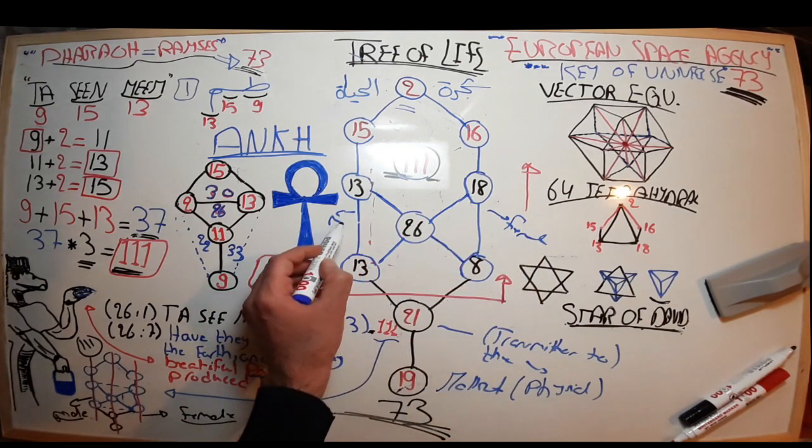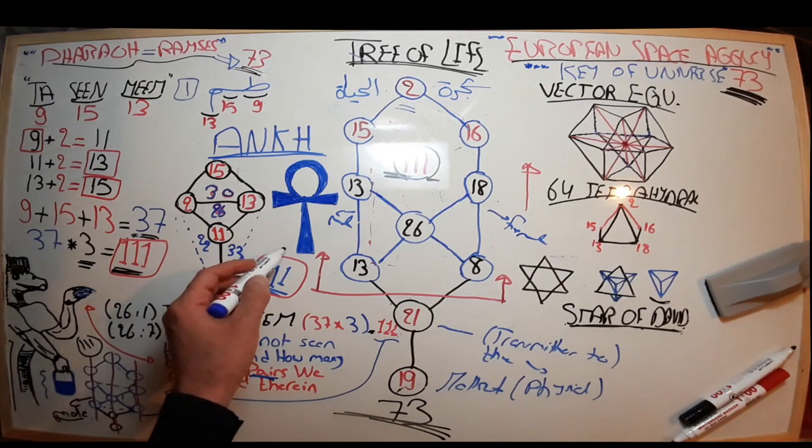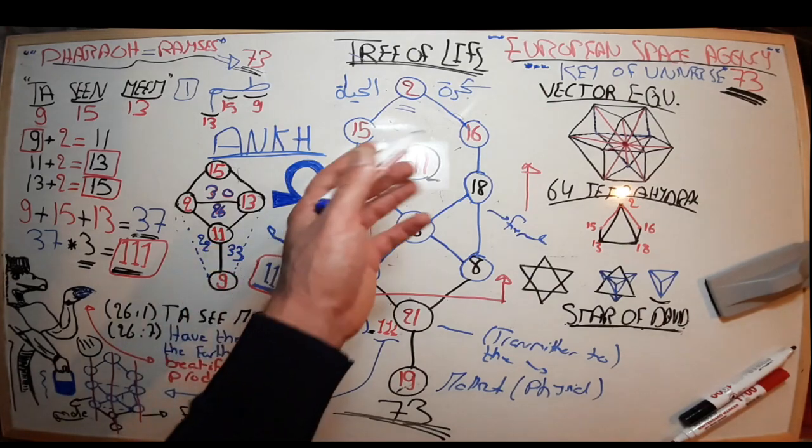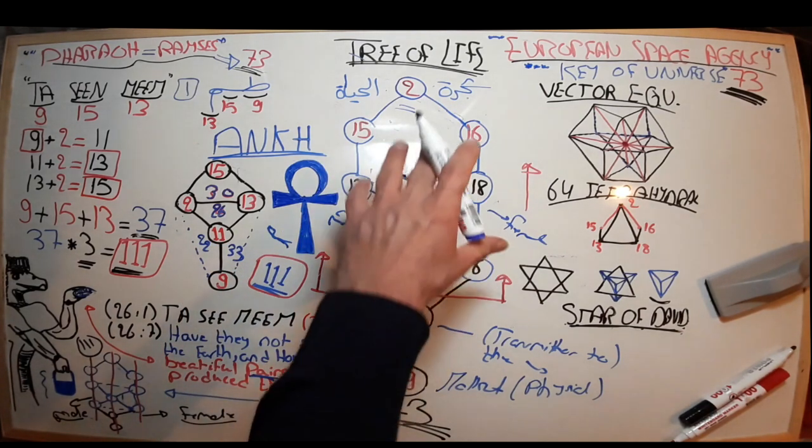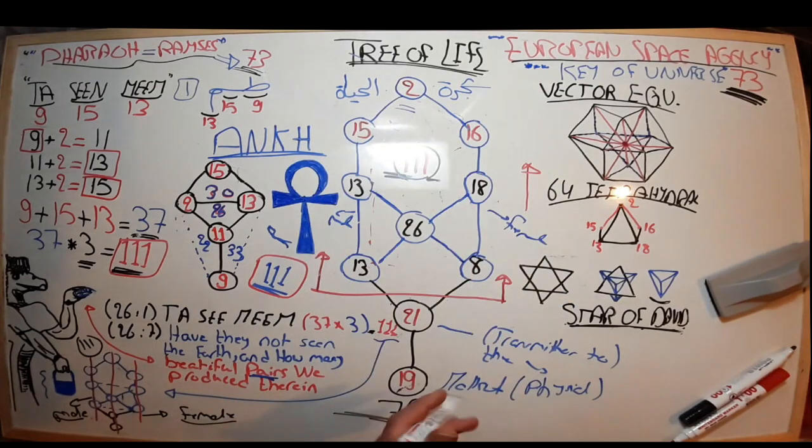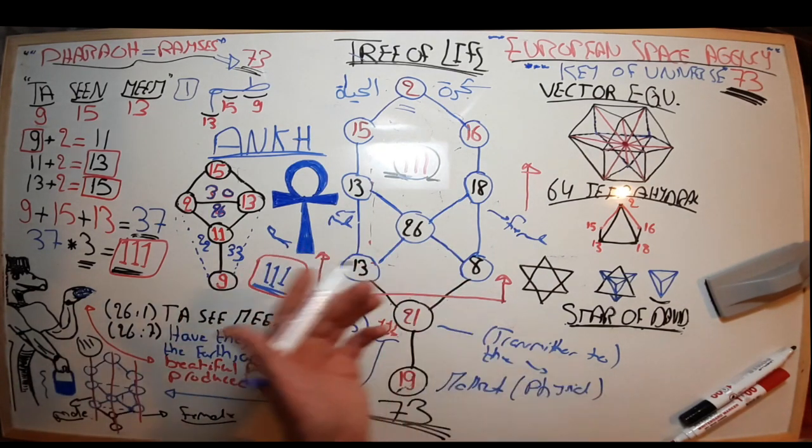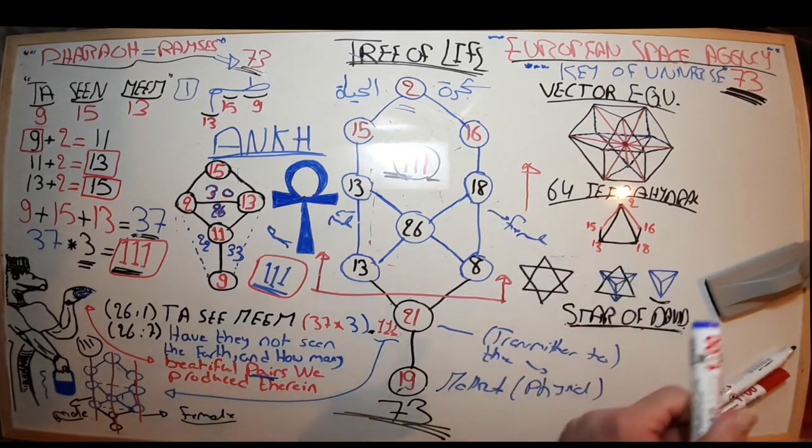And now historians can finally understand what these symbols had represented all along—what the Ankh had represented all along. And of course, the Kabbalists can finally understand what the decoded Tree of Life is and its decoding, which they thought if someone would try to decode it, maybe we would go crazy and would never be able to do so. But if they took a little bit of time to read the Quran, probably they would have been able to solve it by now.